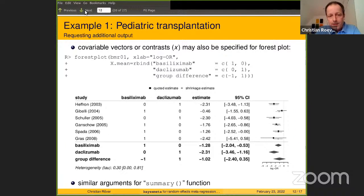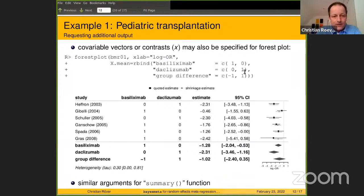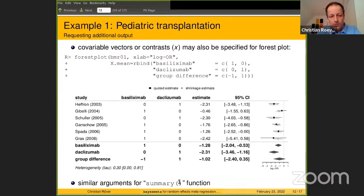The same co-variable coding works for forest plots as well. By supplying co-variable vectors — for example, (1,0), (0,1), and (-1,+1) — you can display in a single forest plot the estimates for the two treatment effects and the difference between them. Similarly, if you are just interested in the numerical figures themselves, you can use these same arguments with the summary function.